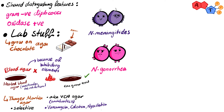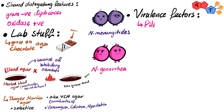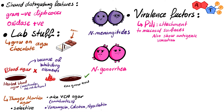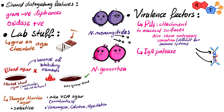Now let's move to the shared virulence factors. First, we have pili, which allow attachment to mucosal surfaces. These pili also display antigenic variation, which makes it difficult for our immune system to target them because they always change their camouflage. Then we have IgA protease, which will cleave IgA antibodies at the hinge point. This facilitates Neisseria survival along mucosal surfaces, because IgA antibodies are found predominantly there.